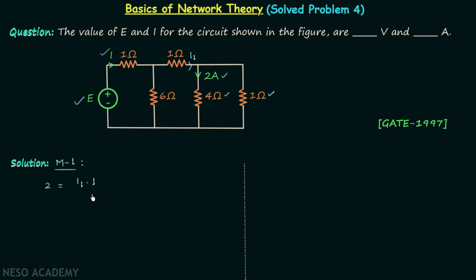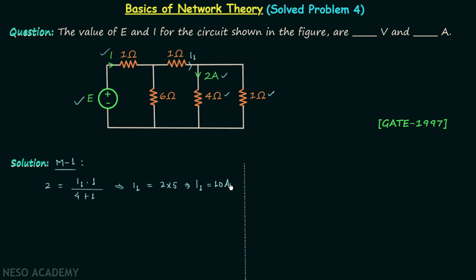We multiply by 1 ohm because we are calculating the current through the 4 ohm resistor. With respect to 4 ohms, 1 ohm is the other resistor, and we divide by the sum of the two resistance values: 4 plus 1. Solving this gives I1 equal to 2 multiplied by 5, so I1 equals 10 amperes.